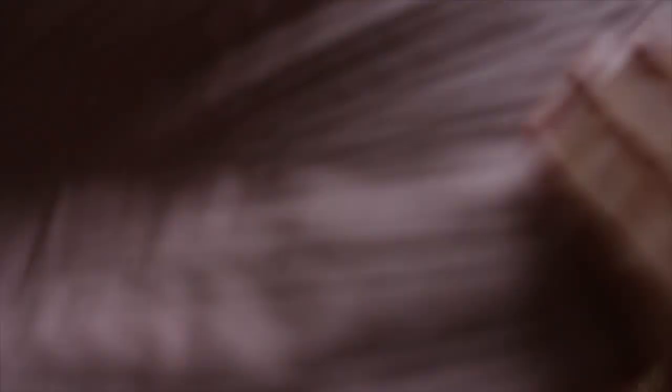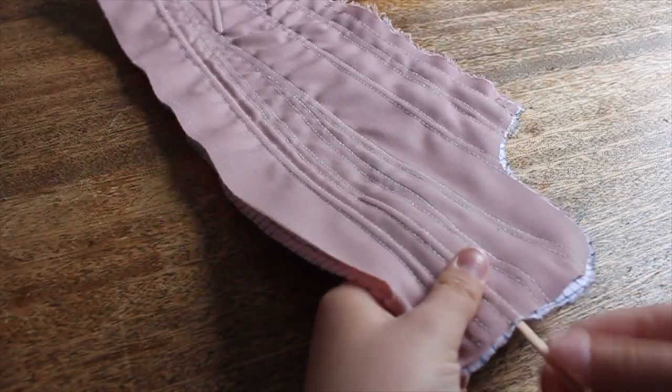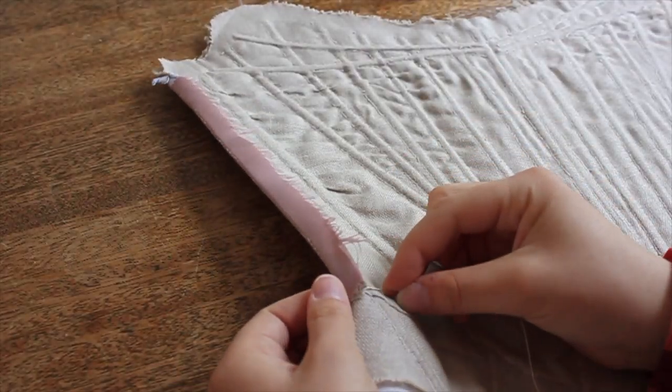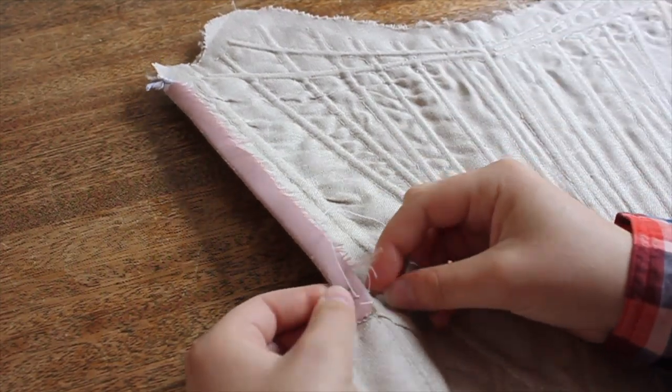After the front panel had been filled with bones, the back panel went much faster. Once each channel had a piece of reed, I ironed the panels. Then I folded under and ironed the seam allowances of each panel.